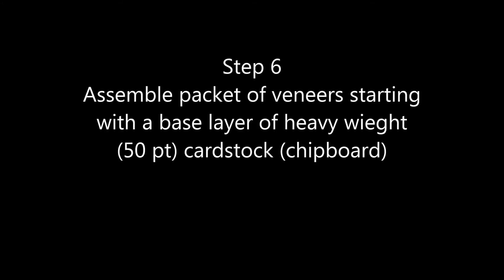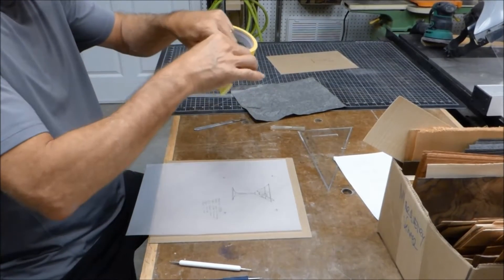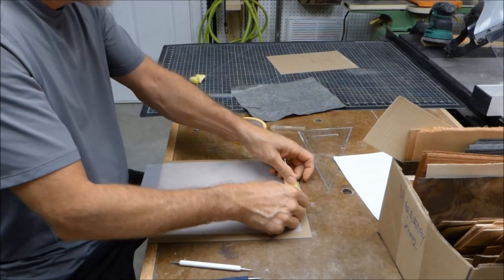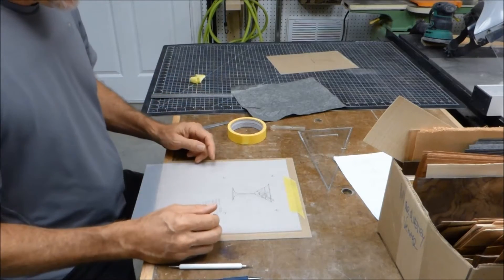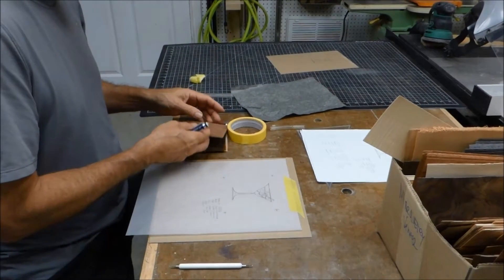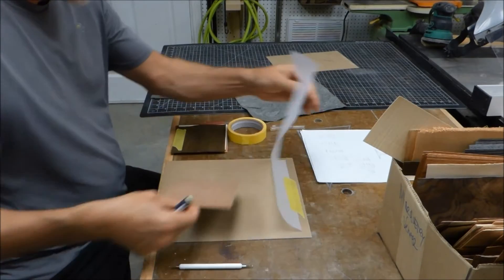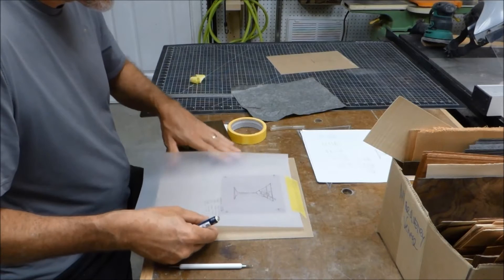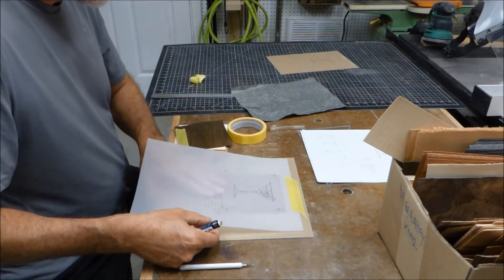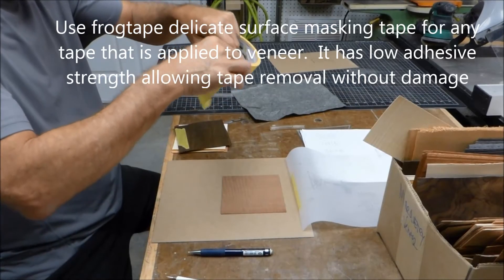Now step six, we're going to assemble a packet of veneers that we're going to cut. What we start with is a base layer of thick chipboard or cardboard, a poster board. This is 50-point cardboard that I'm using, which is pretty thick. It doesn't have to be quite that thick if you don't want. I'm going to first apply our tracing, and that'll just help me make sure that I line up all the veneers so they're centered to get the picture right. This is a fairly simple one, but in general, for more complicated ones particularly, the drawing's really important. So we line it up with the drawing here, and then we just start taping them in, one after one.